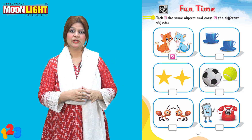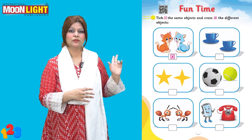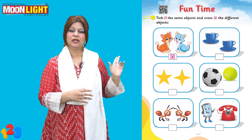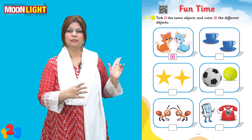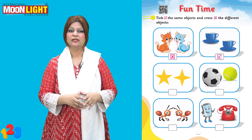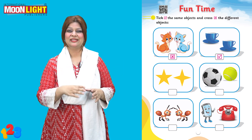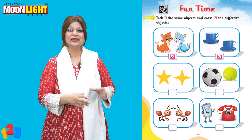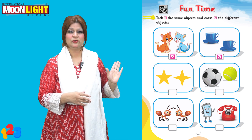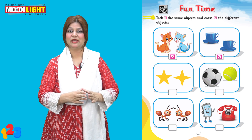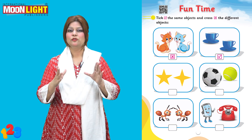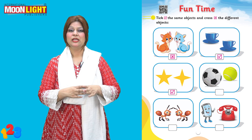Then look at the two cups. These two cups are the same, because the color and size are the same. So what do you do? Put a tick on it. Then you have to do the stars. The stars you are seeing are the same — the colors are the same, the size is the same, all the same. Then you will tick on it.